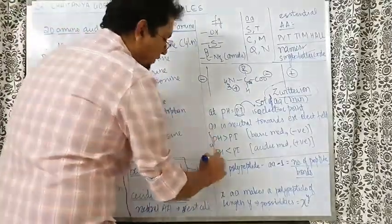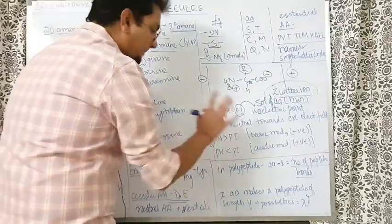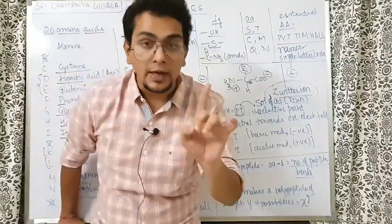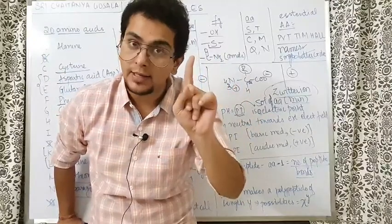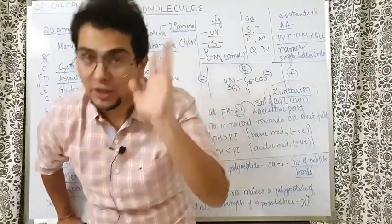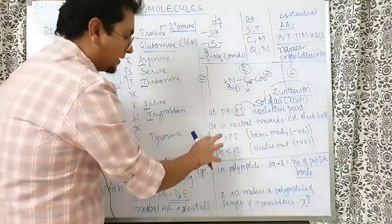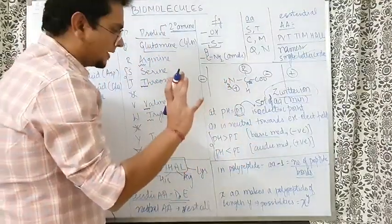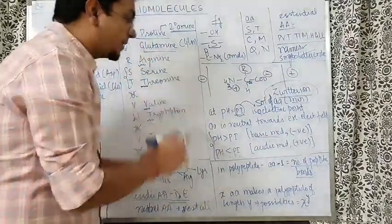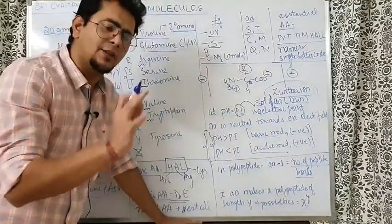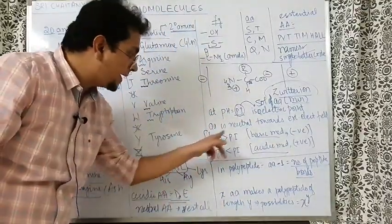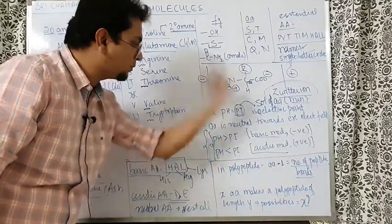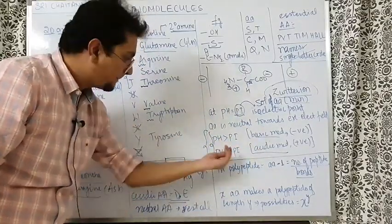What will happen to an amino acid at a pH more than pI or less than pI? Here is a very simple trick: treat pI as a neutral pH for the amino acid. If the pH is more than pI, consider it to be basic medium for the amino acid. If pH is less than pI, consider it to be acidic medium. This trick is very useful for MBBS also. pH more than pI means more than neutral, which means basic. pH less than pI means acidic.